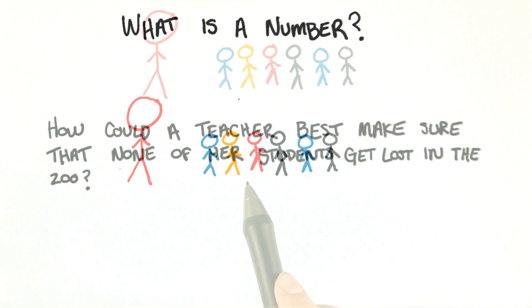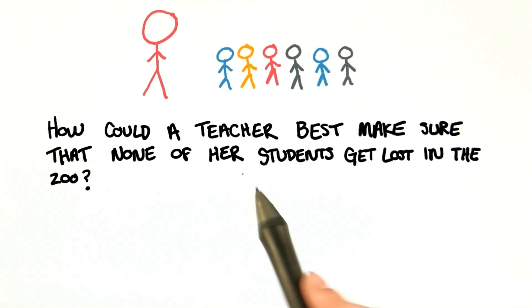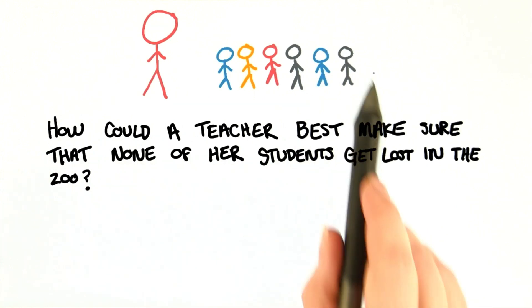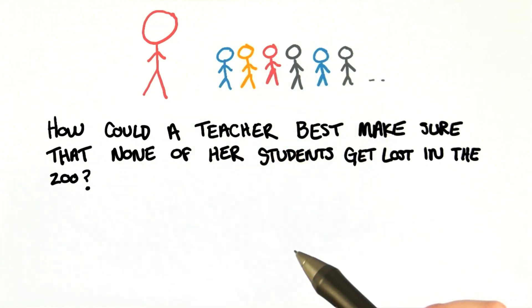What do you think might be a better way of doing this? Our first quiz of the course will be a really kind of silly question, but let's go with it. How could a teacher make sure that none of her students get lost at the zoo? And here are a couple of answers that you get to choose from.